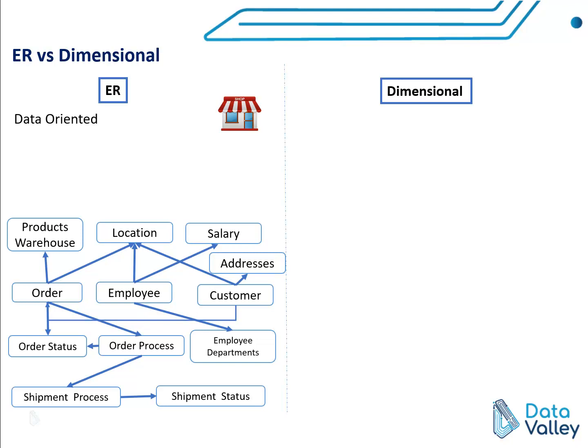We can also have a data set to describe customer information plus customer address information. As you can see, we started by looking at what are the available data sets. We check available systems in a retail shop and start designing our ER model based on available entities. We are not looking at a use case or business interactions — ER modeling is based on entities.